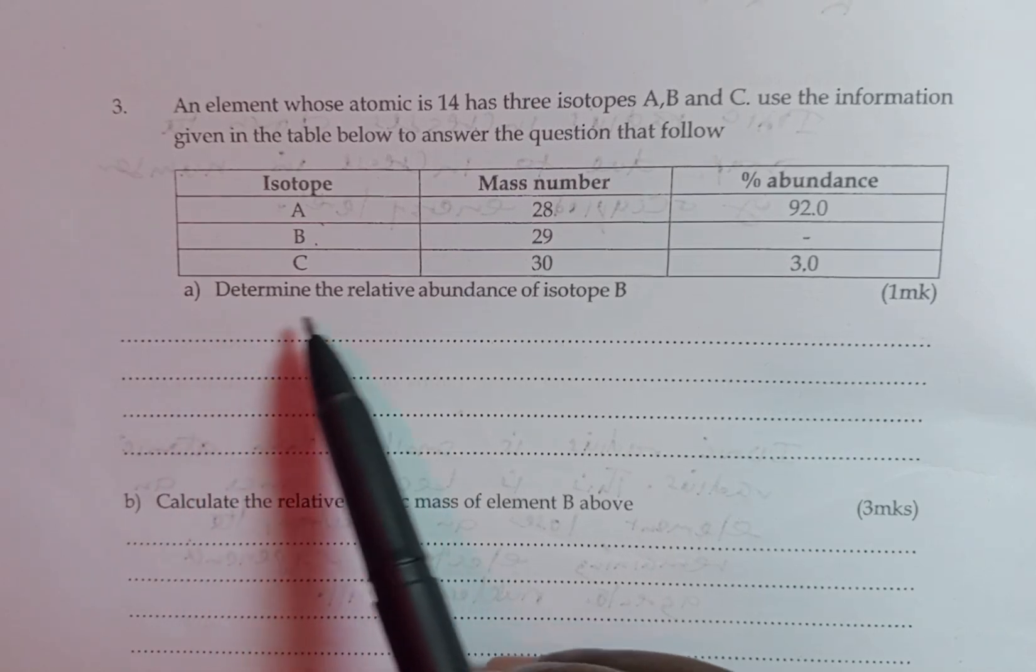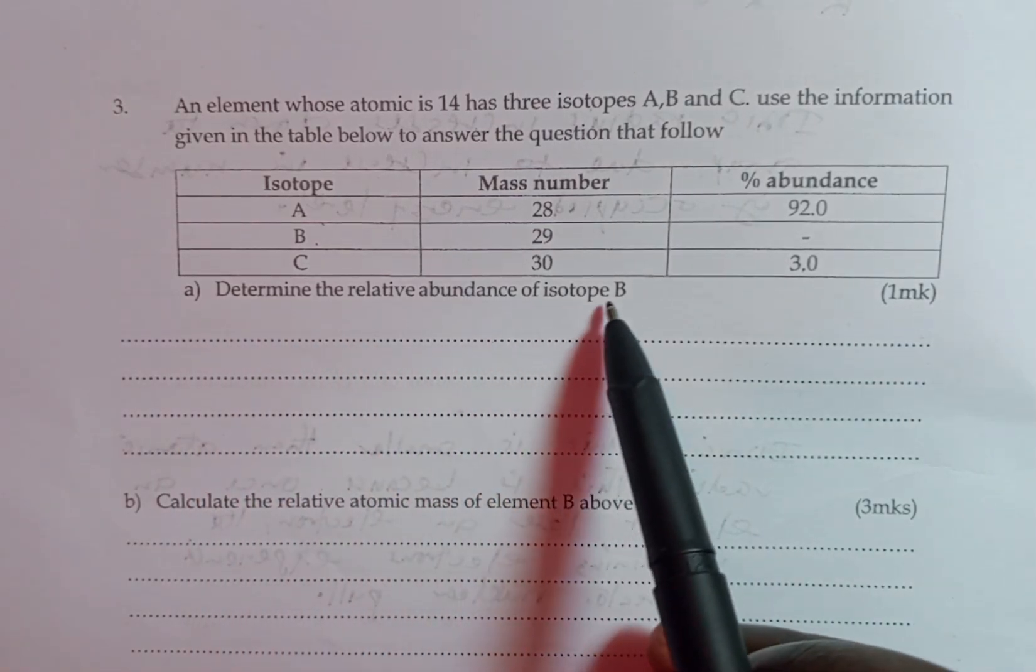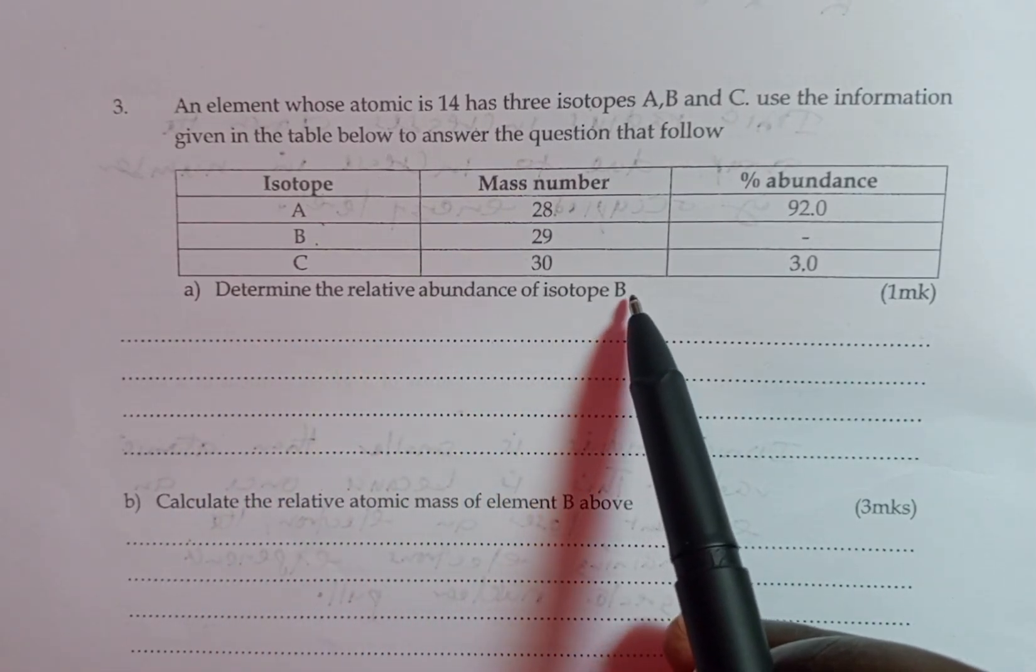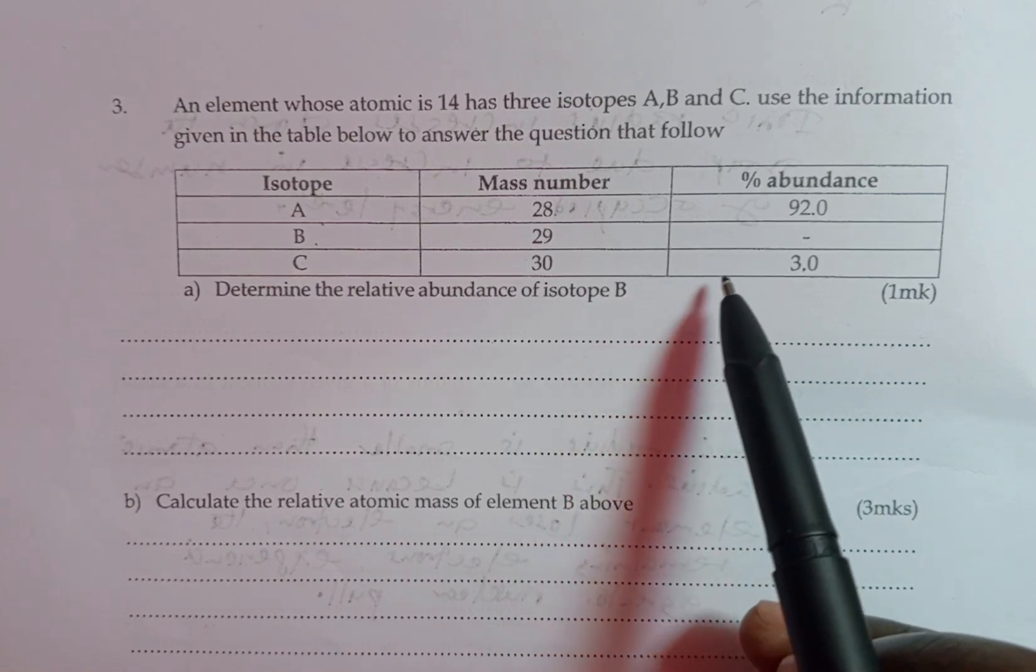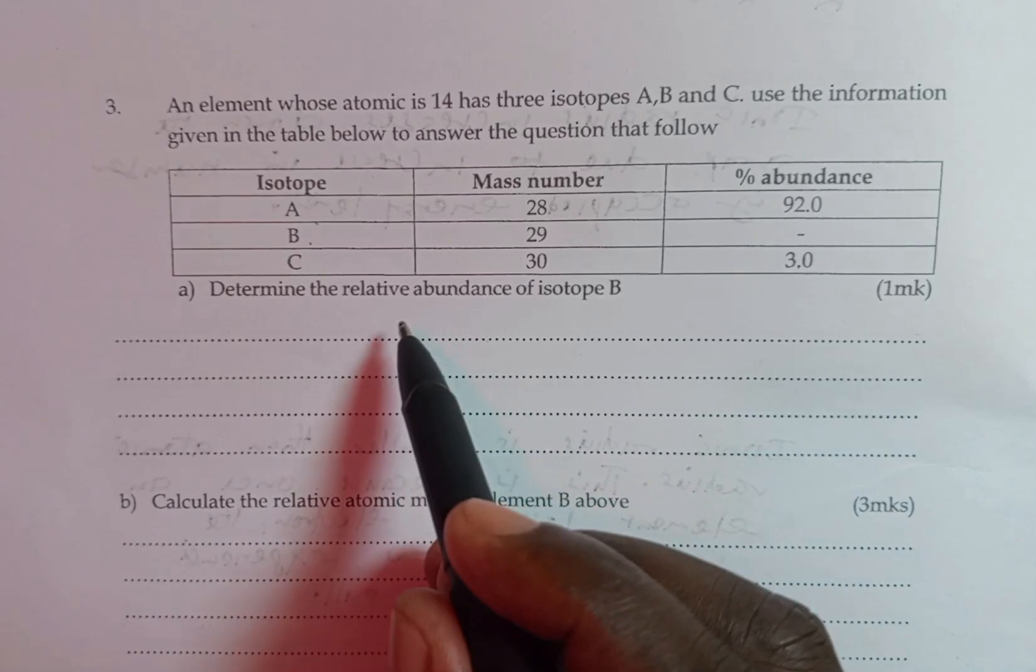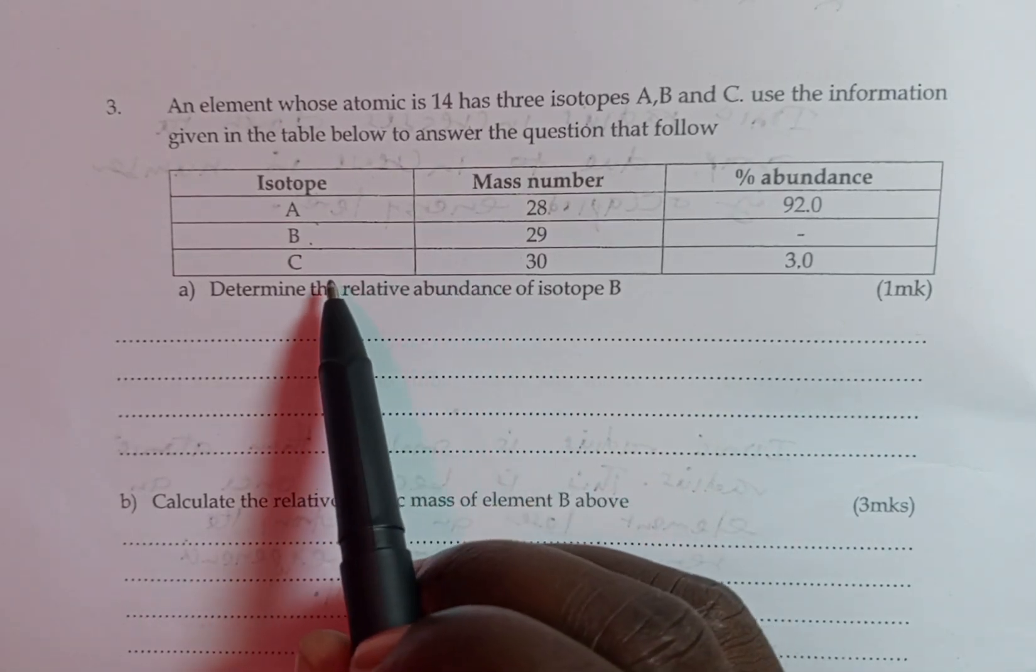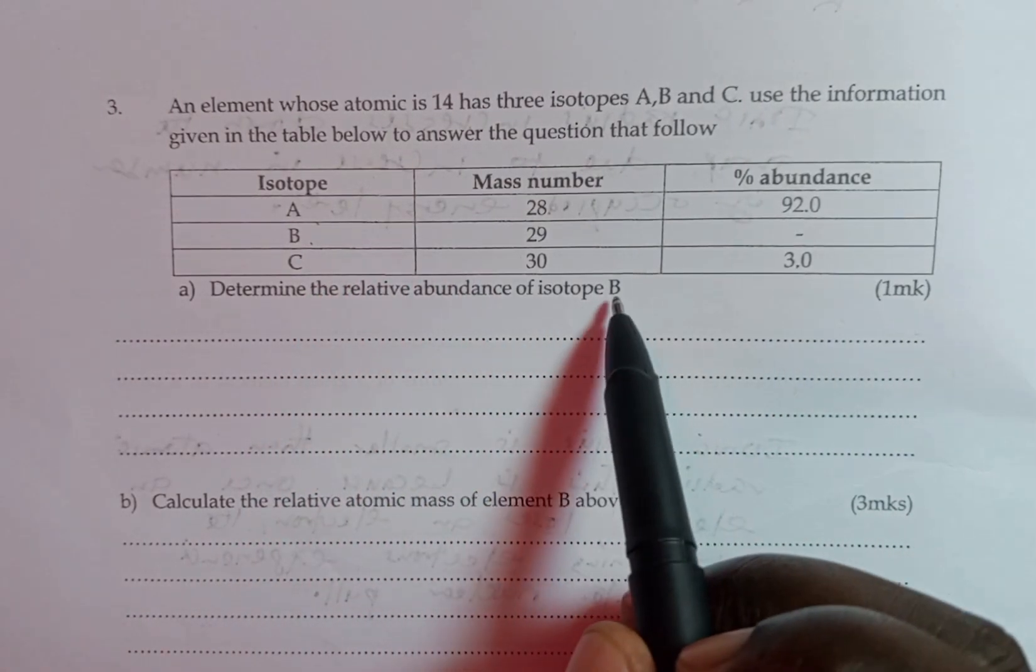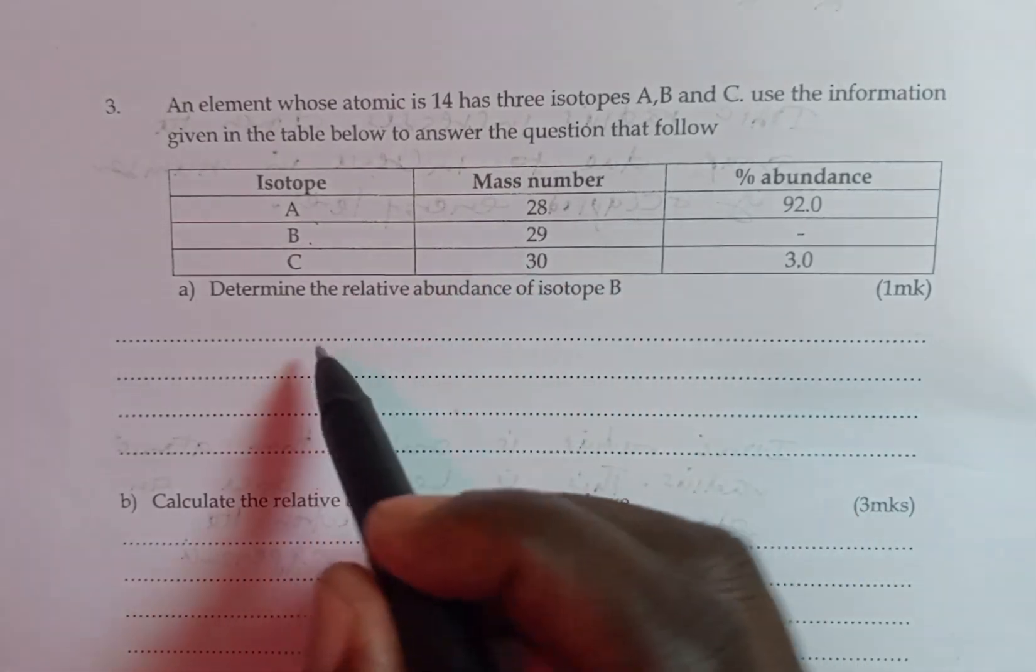Part A, determine the relative abundance of isotope B. Remember, the total percentage abundance is supposed to be 100%. That means, for us to get the relative abundance of isotope B, we take 100.